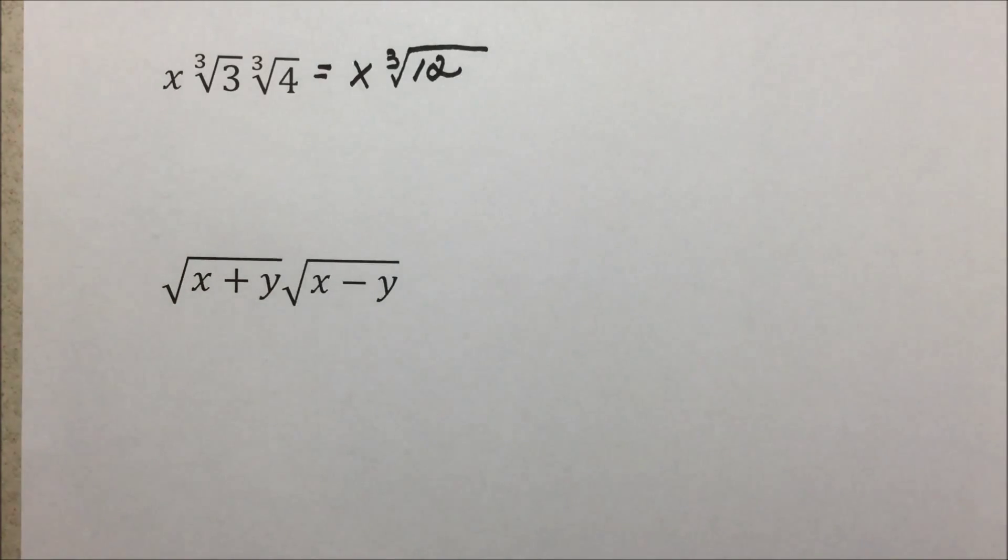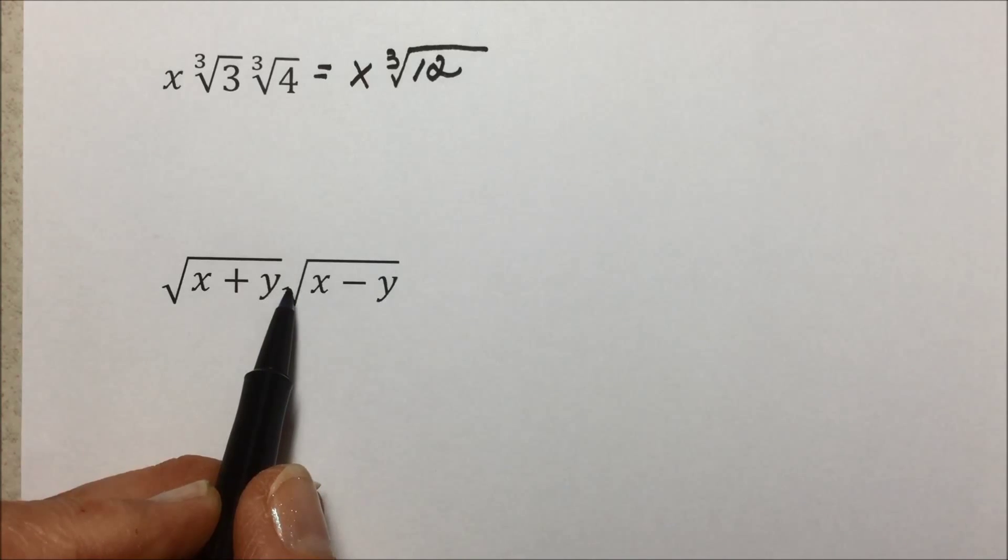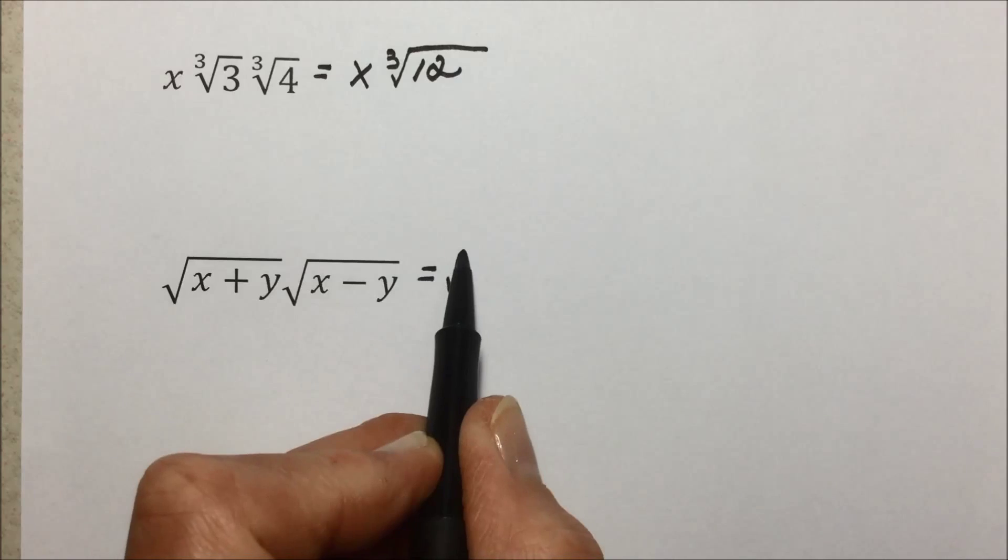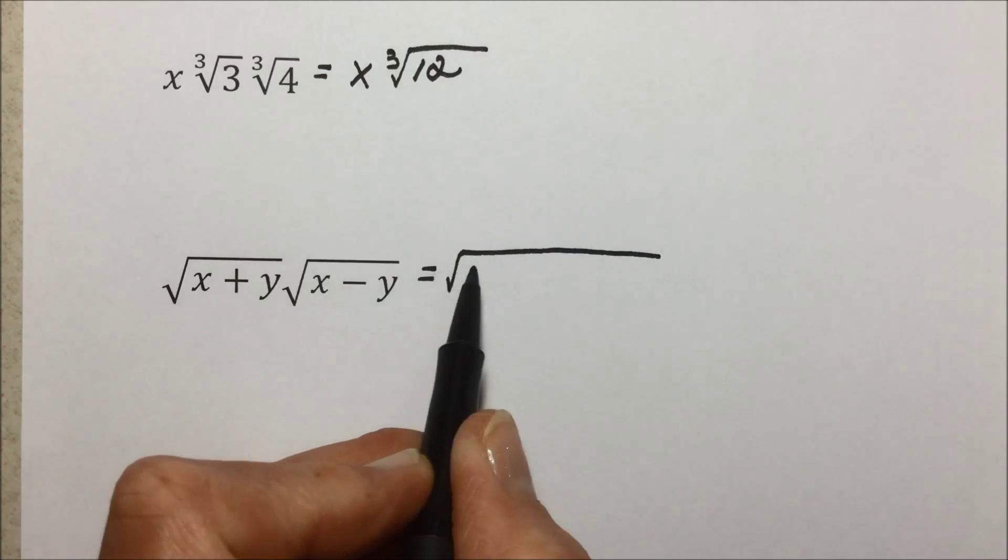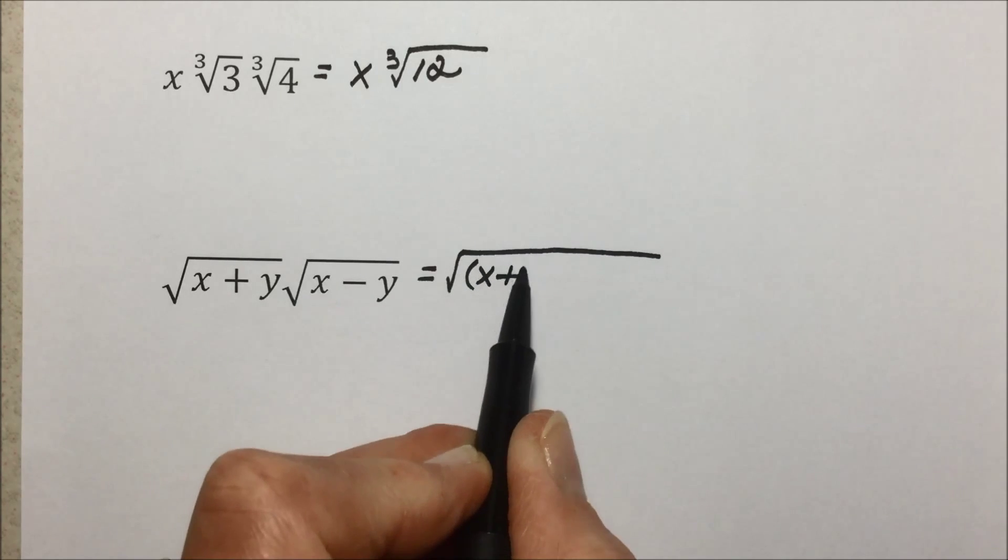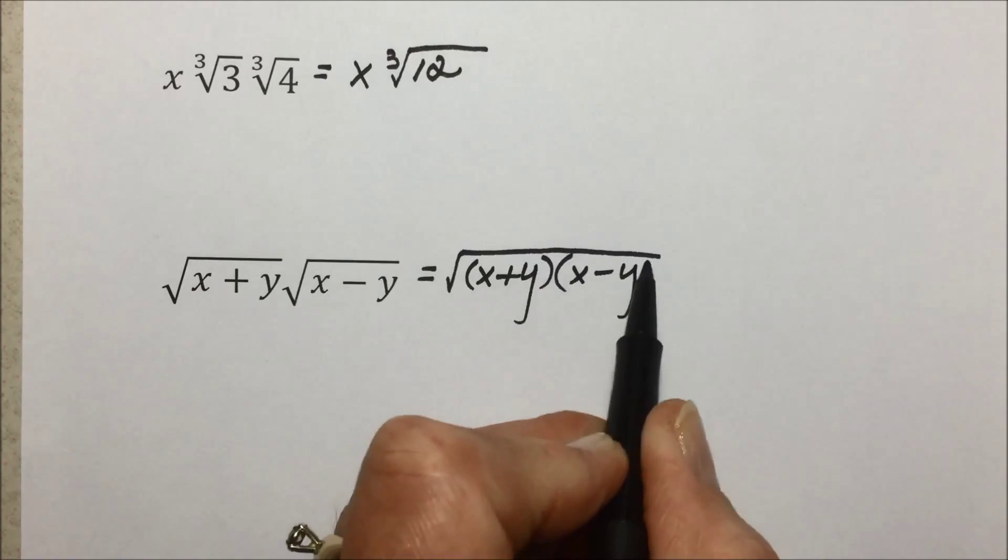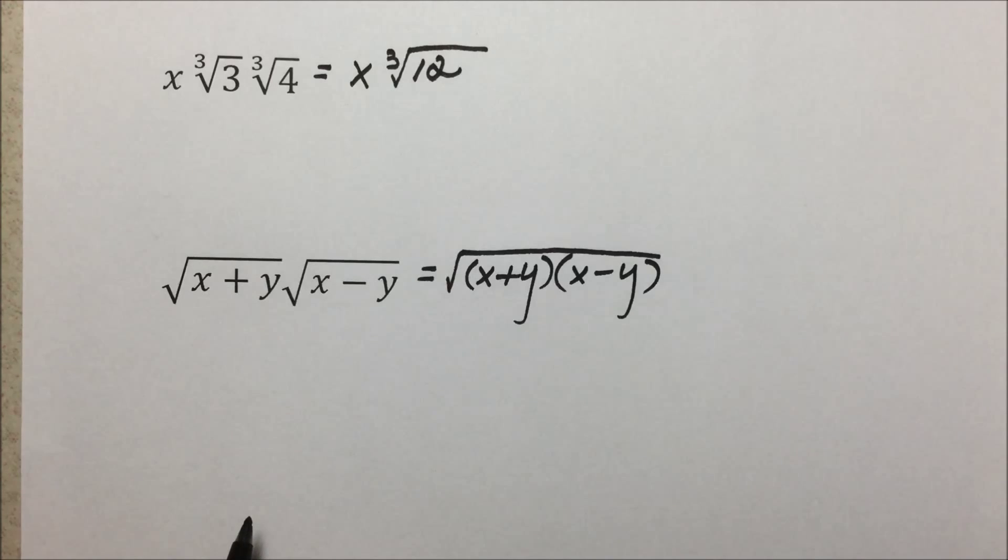In this last example, we're multiplying radicals together. They are both square roots, so the index is 2 on both of them. We can multiply the radicands together, x plus y times x minus y, and then simplify from there.